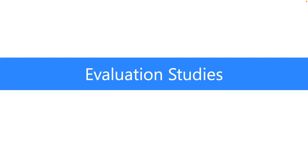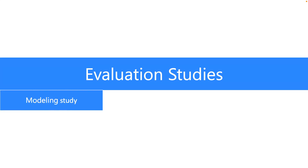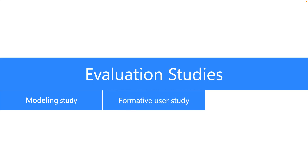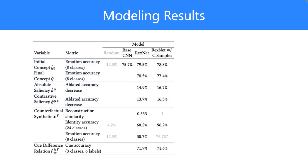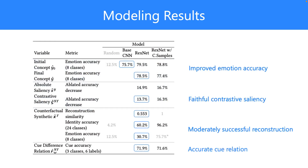To evaluate how well RexNet works and how it affects users' behavior, we first conducted a modeling study to demonstrate its performance. Then, in a formative user study, we investigated how users would use relatable explanations. And finally, with a summative user study, we evaluated the effectiveness of each explanation. The key finding from the modeling study is that RexNet can improve the primary task performance — that is, the emotion recognition accuracy. We attribute this performance gain to making the model being aware of vocal cues.